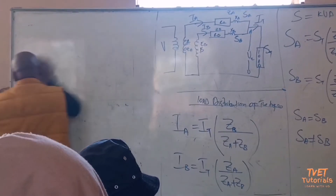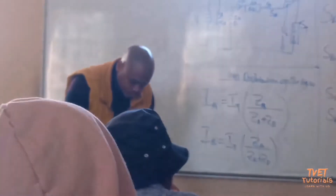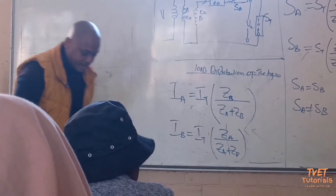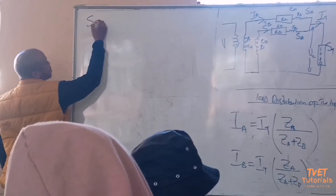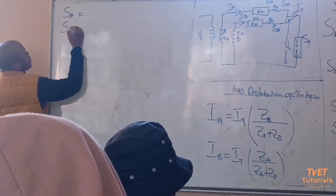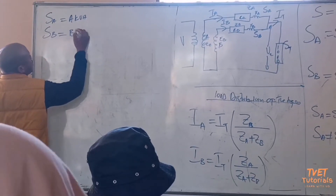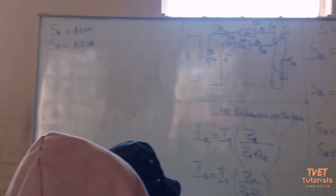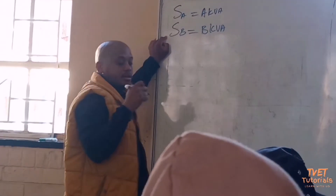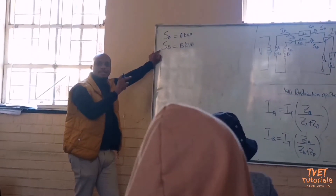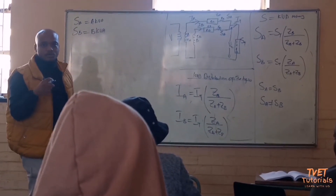Let me show you how to get that base value. Suppose you are given SA as one value, say A KVA, and SB as another value, say B KVA, and clearly these two values are not equal. You then choose one of the two as the base. To standardize your choice, always choose the one that has the biggest KVA value from the two.